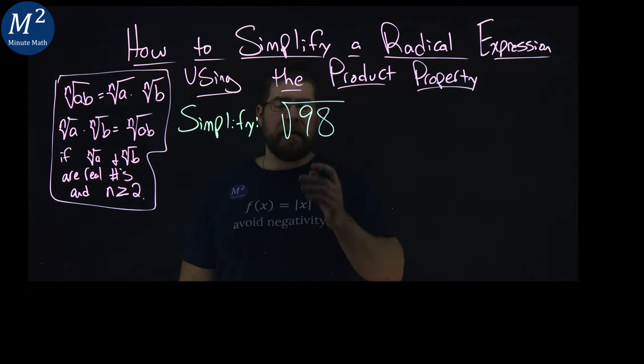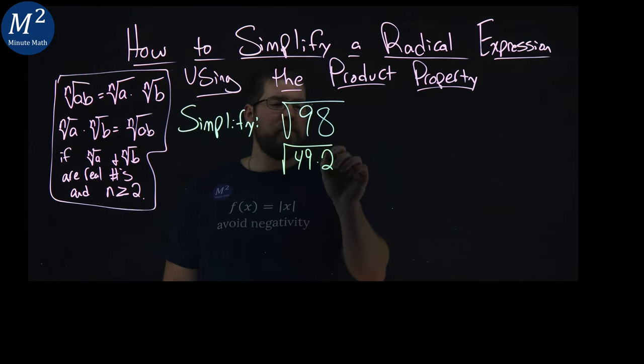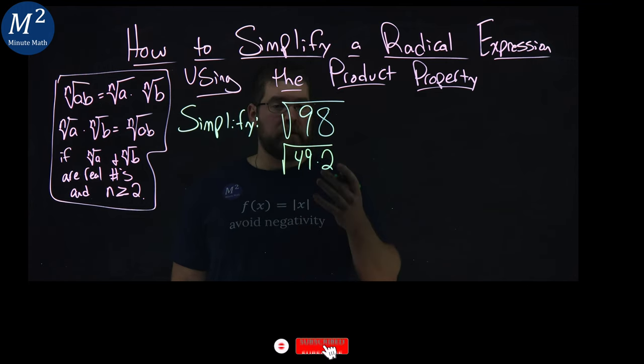So let's apply that here. 98 is 49 times 2. So we have 49 times 2 equals 98. So far so good.